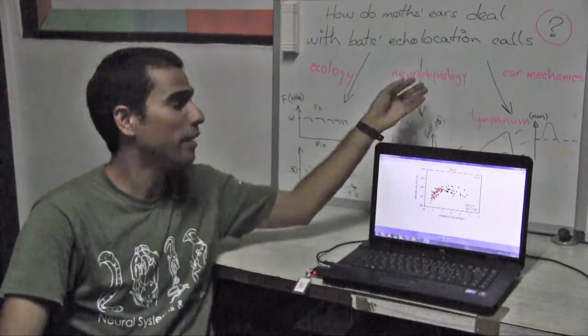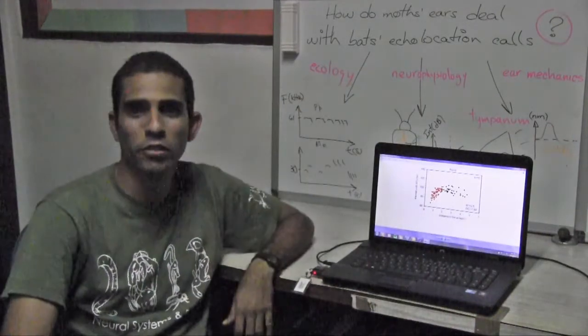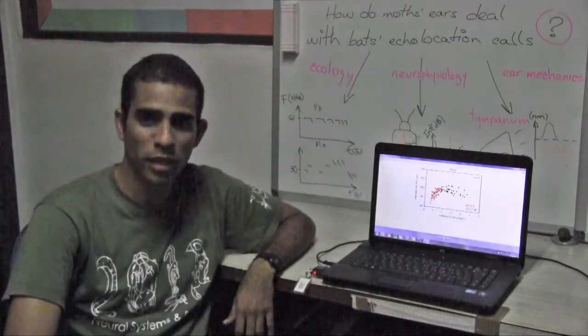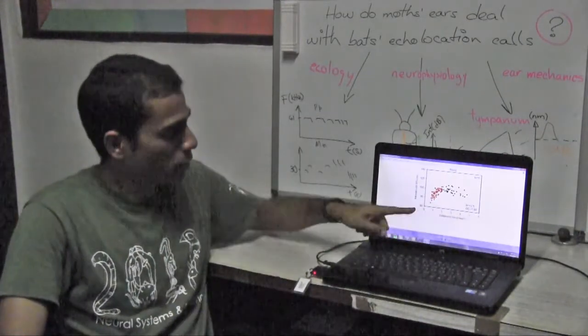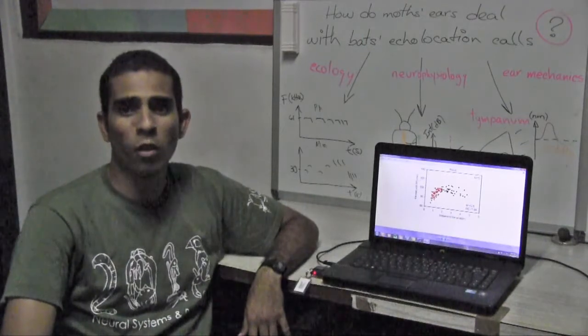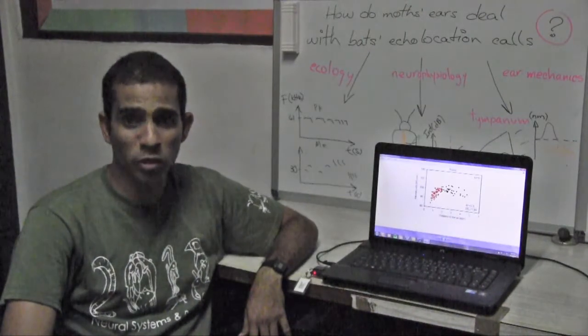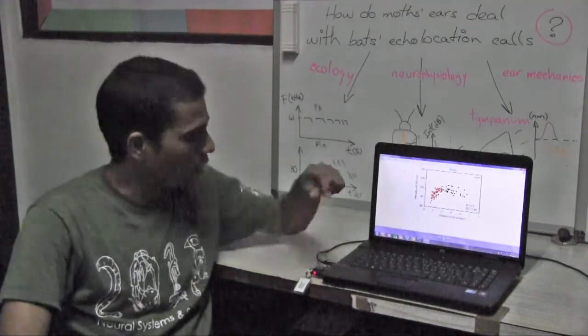Both ear mechanics and neurophysiology have been addressed using constant-intensity echolocation calls, but our field studies show intensity compensation when bats approach target. So, it is open how the neuronal or mechanical response would vary with calls of decreasing intensity.